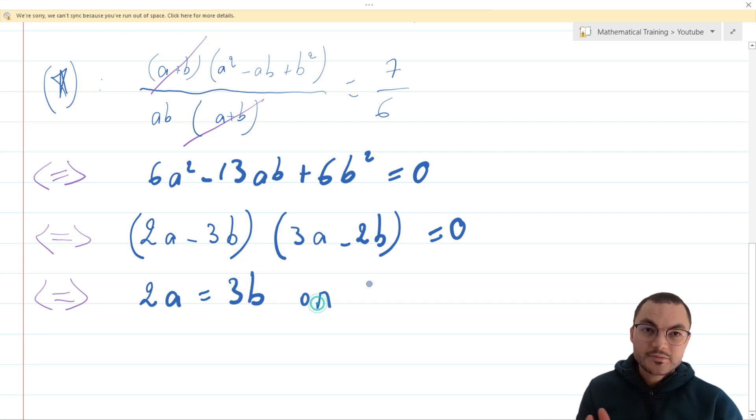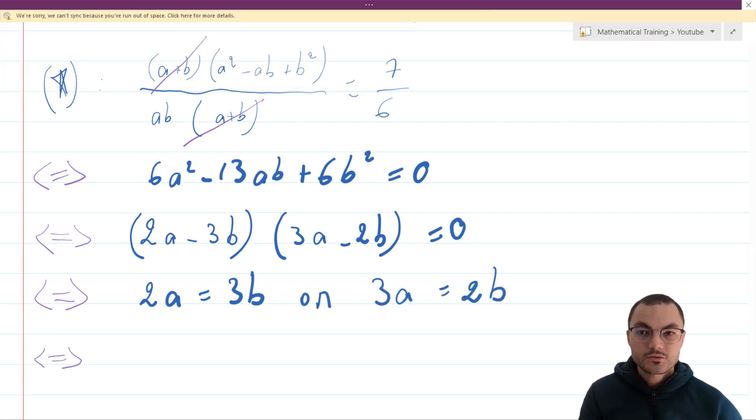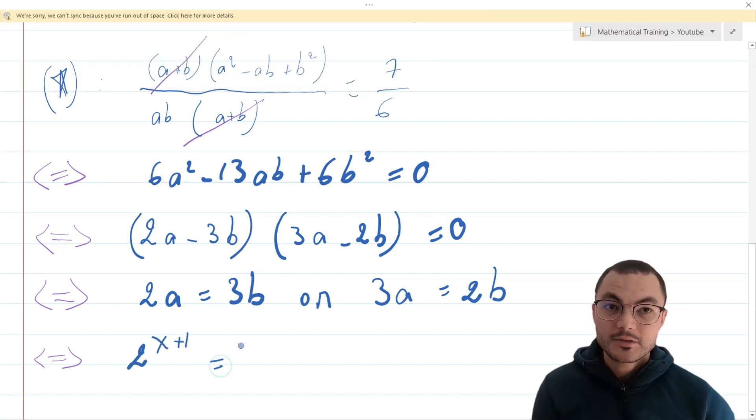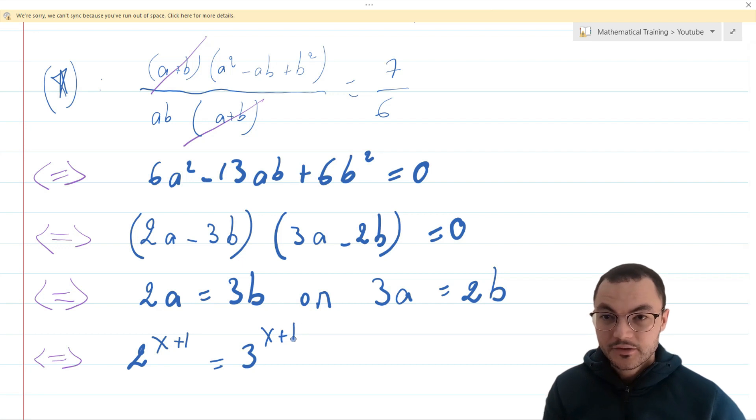Eventually 2 times a must be equal to 3b or 3a equals 2b. 2 to the power of x plus 1 equals 3 to the power of x plus 1 which is only true if x plus 1 is equal to 0.